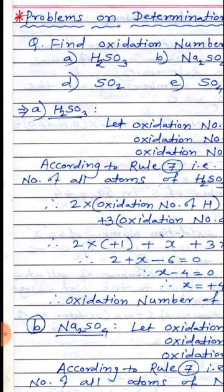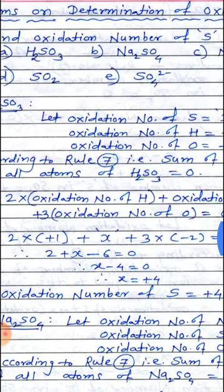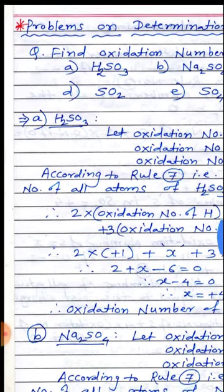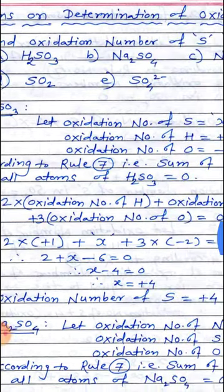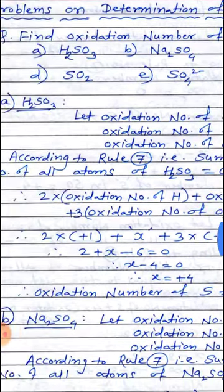Last time we have seen the rules to assign the oxidation number of an element. Today's lecture we have to see the problems related to determination of oxidation number — problems on determination of oxidation number.